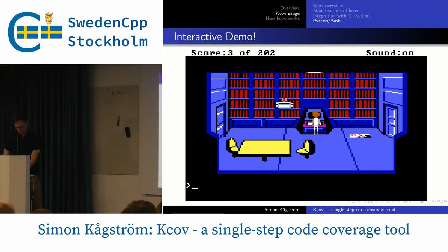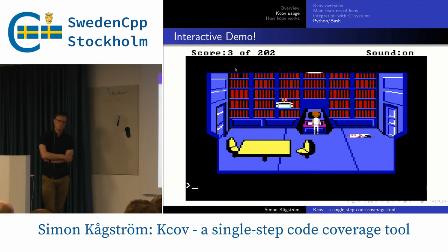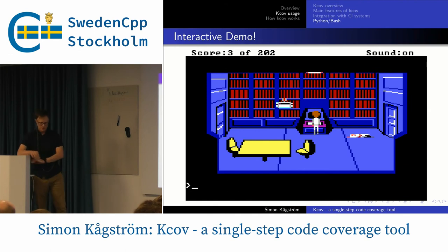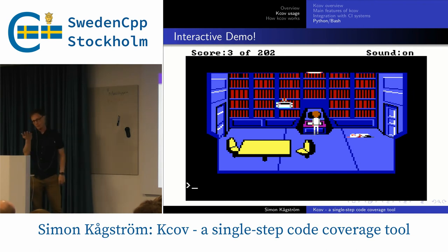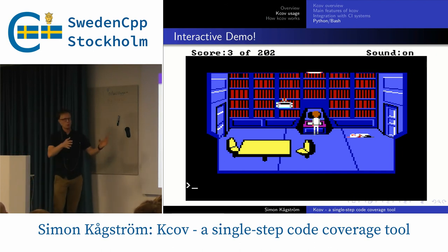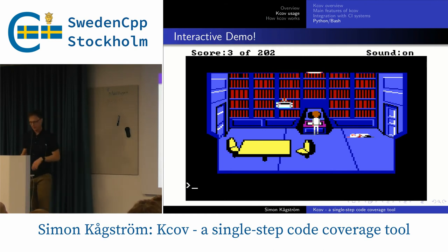Question: how are you merging these reports from two different binaries where the same source code has been used, and how does it detect that it's the same source code? It hashes the file name and the contents of the source files. Of course, you can also collect from Python and Bash and get silly reports where you merge Python and C code, but in general it will hash the contents and the file name.